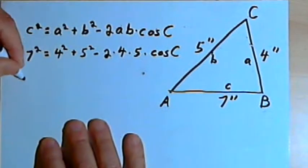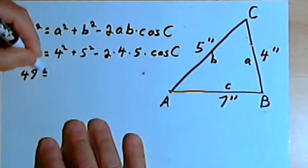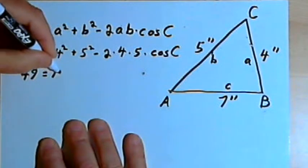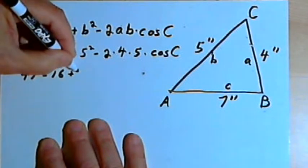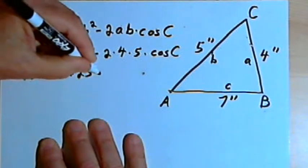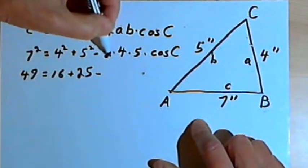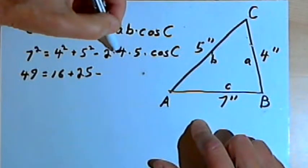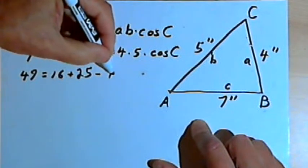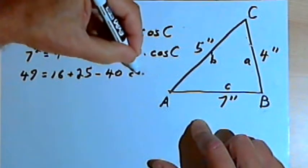Well, 7-squared is 49, 4-squared is 16, 5-squared is 25, 2 times 4 is 8, 8 times 5 is 40, times the cosine of c.